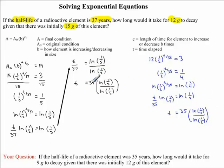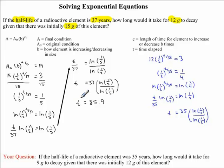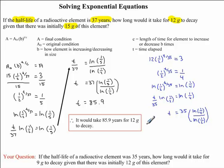Now we're going to put this into our calculator: ln(1/5) divided by ln(1/2), then multiplied by 37. You should find that the final answer is t = 85.9. Our time is in years because our half-life was in years. Therefore, it would take 85.9 years for 12 grams to decay.